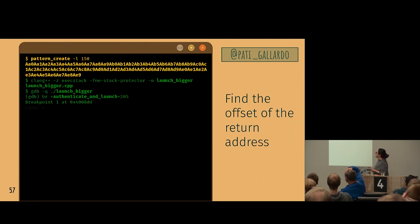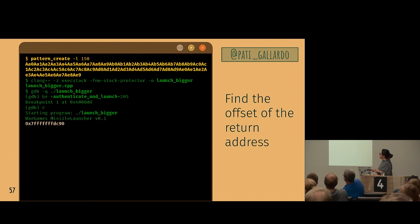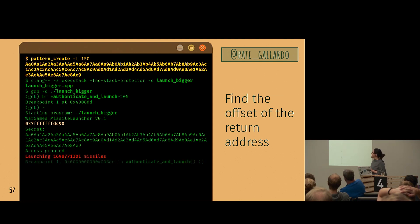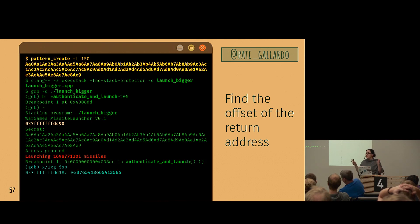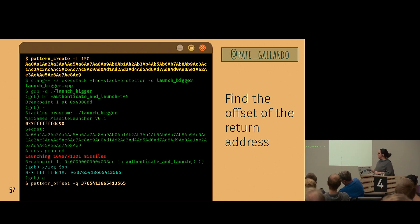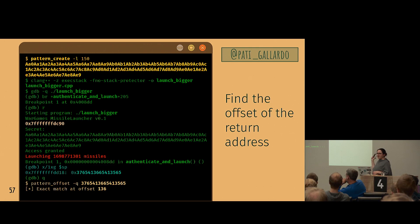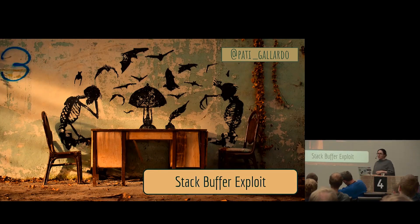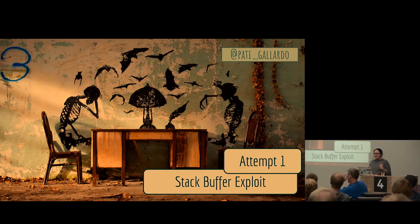We feed that value into pattern_offset and it tells us there's an exact match at 136 characters into our string. So we know 136 is the offset to the return address. We have the buffer address and the offset. But we still need shellcode — something to actually do the thing. I went through the classic example of writing shellcode in my CppCon talk last year. We'll try that shellcode here first.